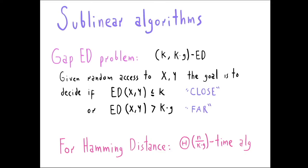For context, consider the Hamming distance, which is just the number of positions in which x and y differ. For the Hamming distance gap problem, we have a matching upper and lower bound of n/(k·g). The upper bound is simply: sample that many random positions in both strings, compute the Hamming distance of the sub-sampled strings, and output 'far' if it is at least 1, otherwise 'close.' This has a matching unconditional lower bound.